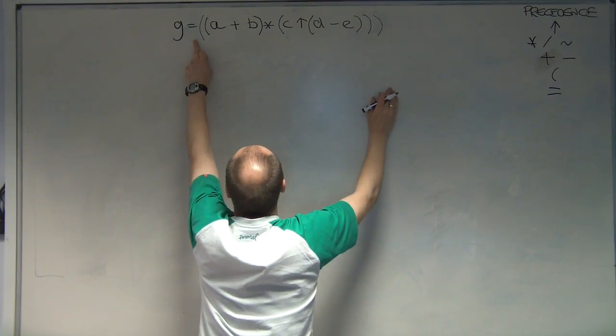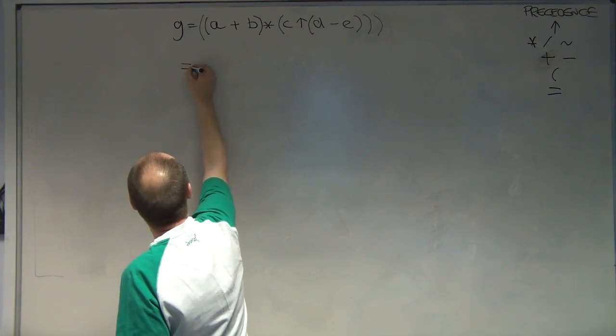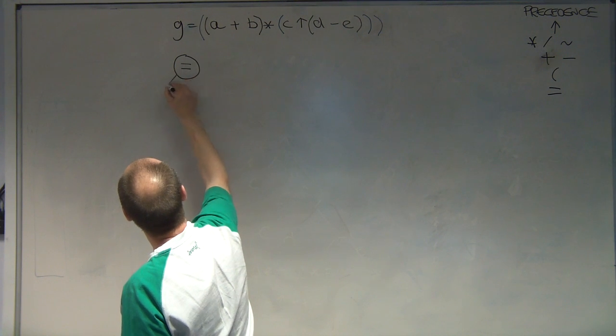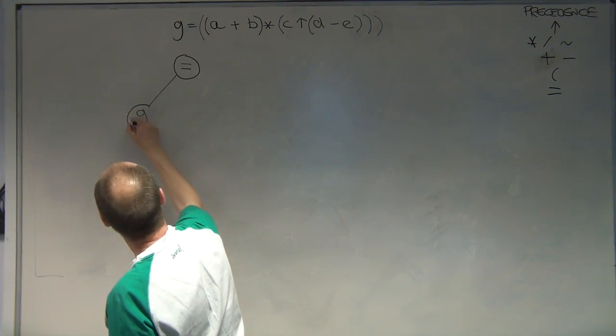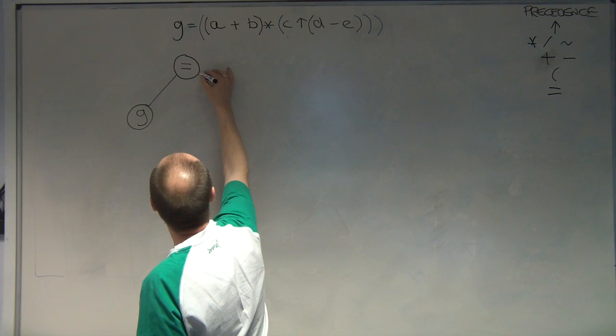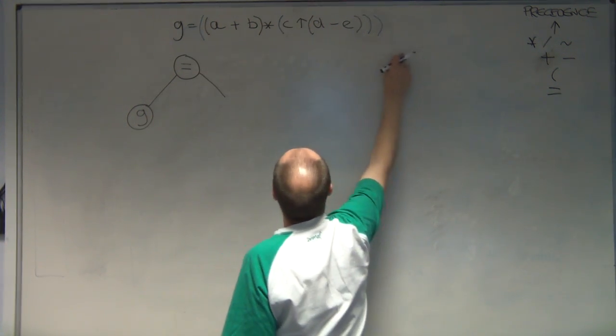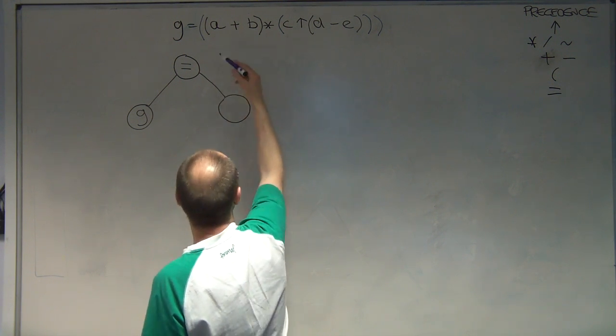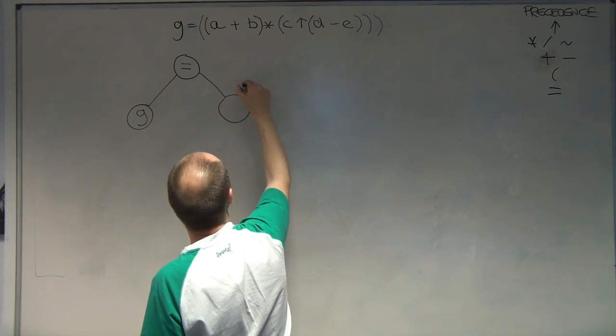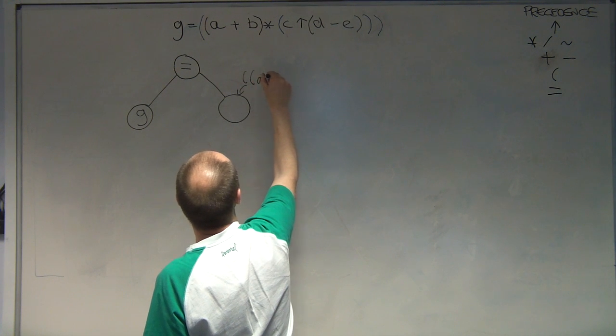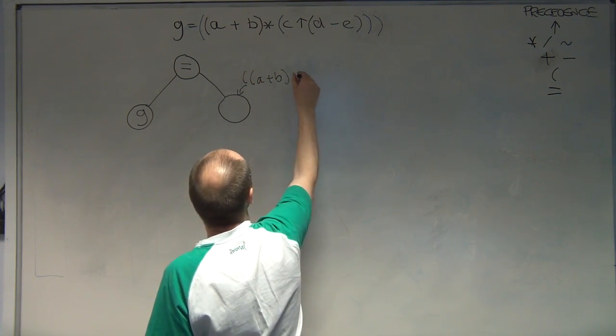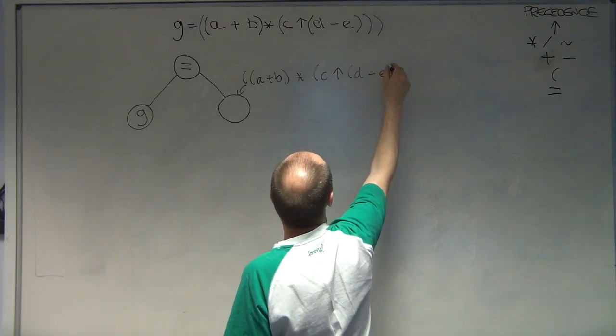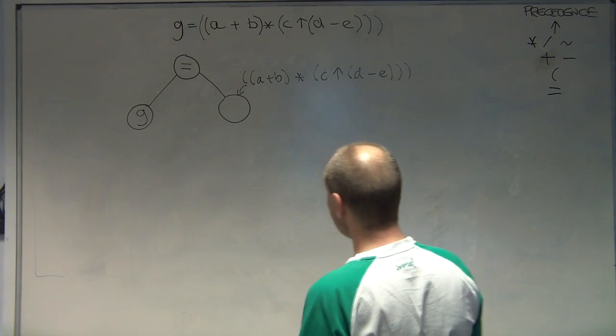And I'm going to look for the operation. So I've got the operation is equals. So I'm going to create a node. And on the left hand side of that operation is G. So I'm going to do a left pointer to G. On the right hand side of that is all of this. So I'm going to create a node. Don't know what's going to go in there yet.